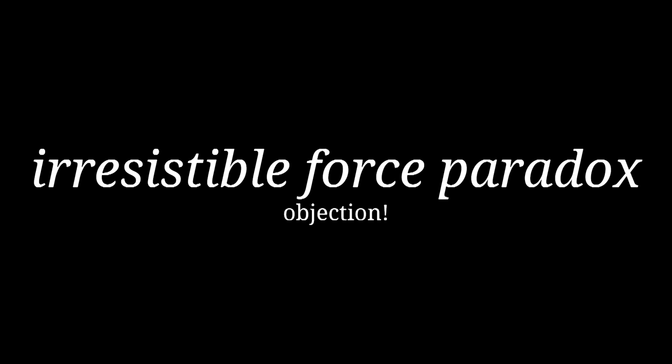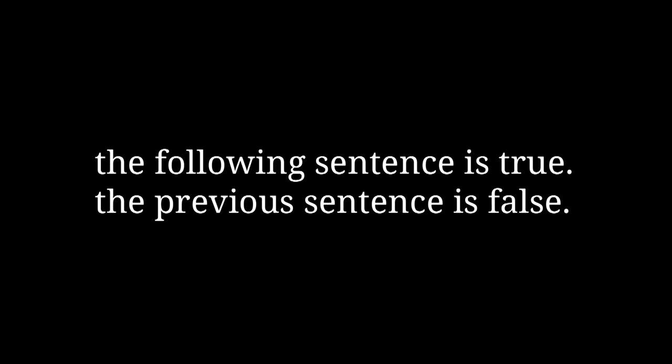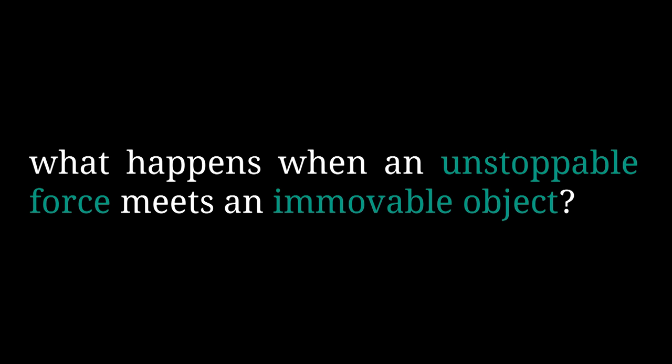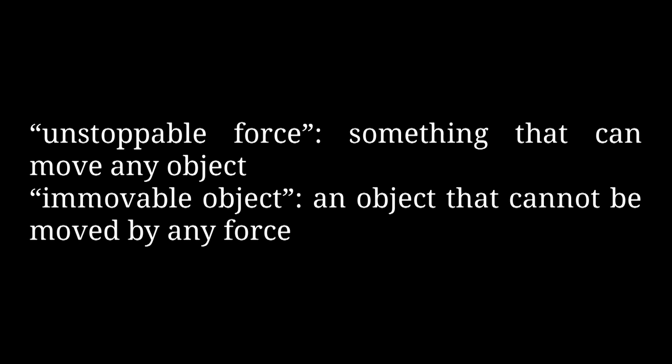Another common type of logical contradiction is when, instead of having one thing contradict itself, two things contradict each other. The most well-known example of this subtype is the irresistible force paradox: what happens when an unstoppable force meets an immovable object? If the unstoppable force is capable of moving the object, then the object isn't immovable. But if the immovable object isn't moved by the force, then the force isn't unstoppable. So at least one of these two things can't exist, because if they both exist, it's a contradiction.